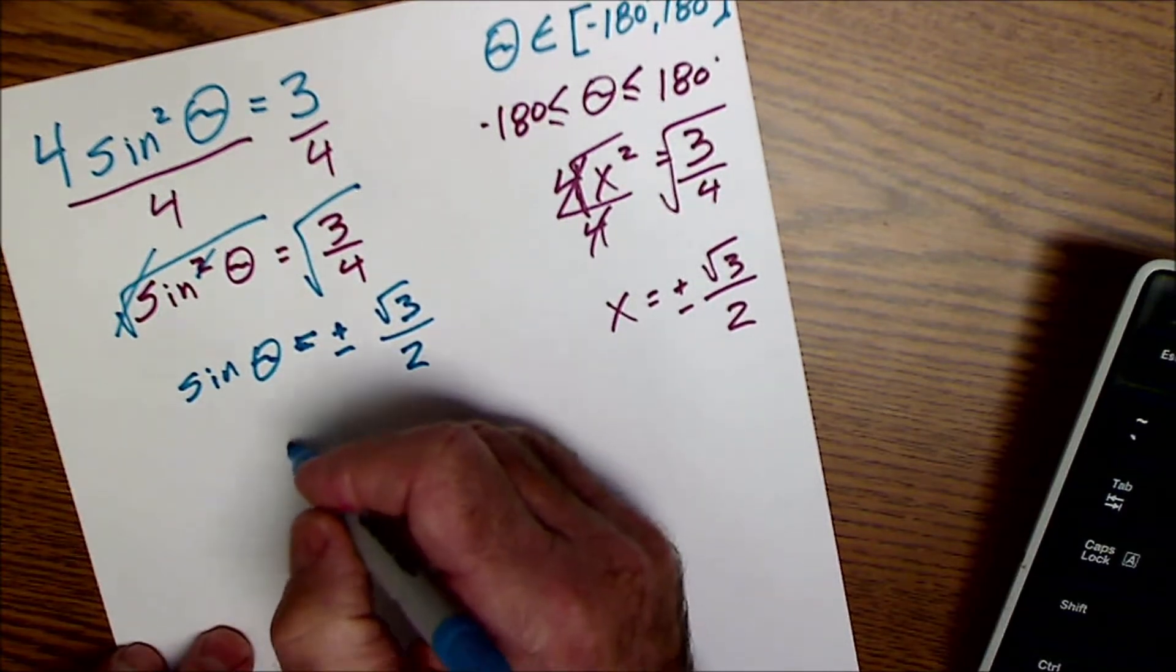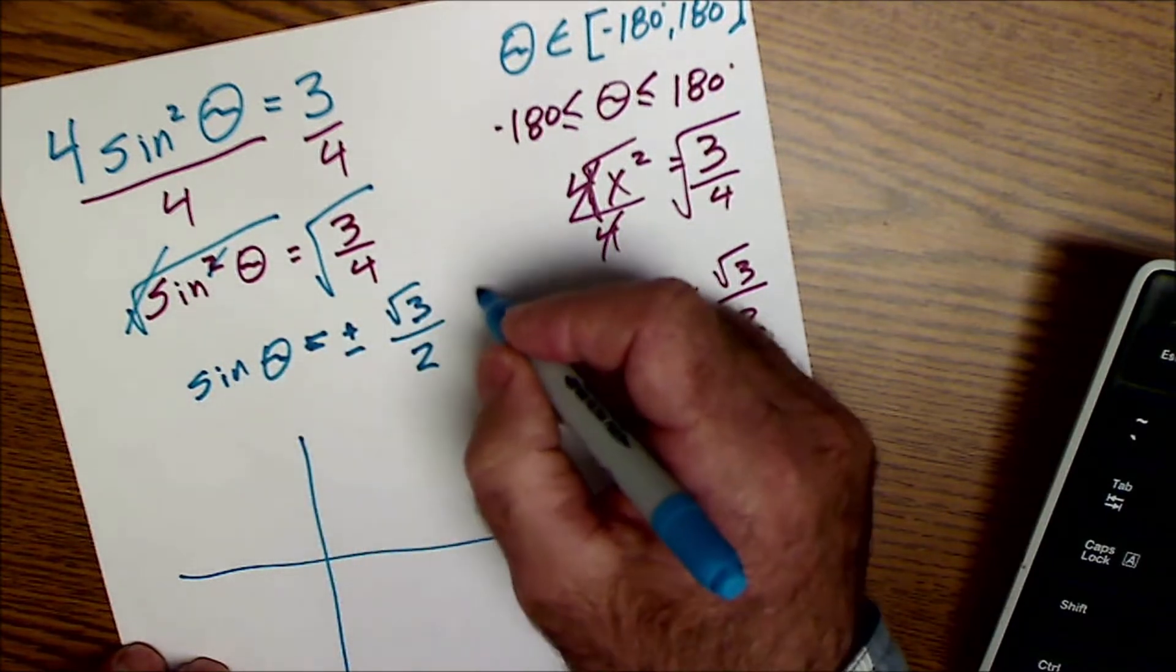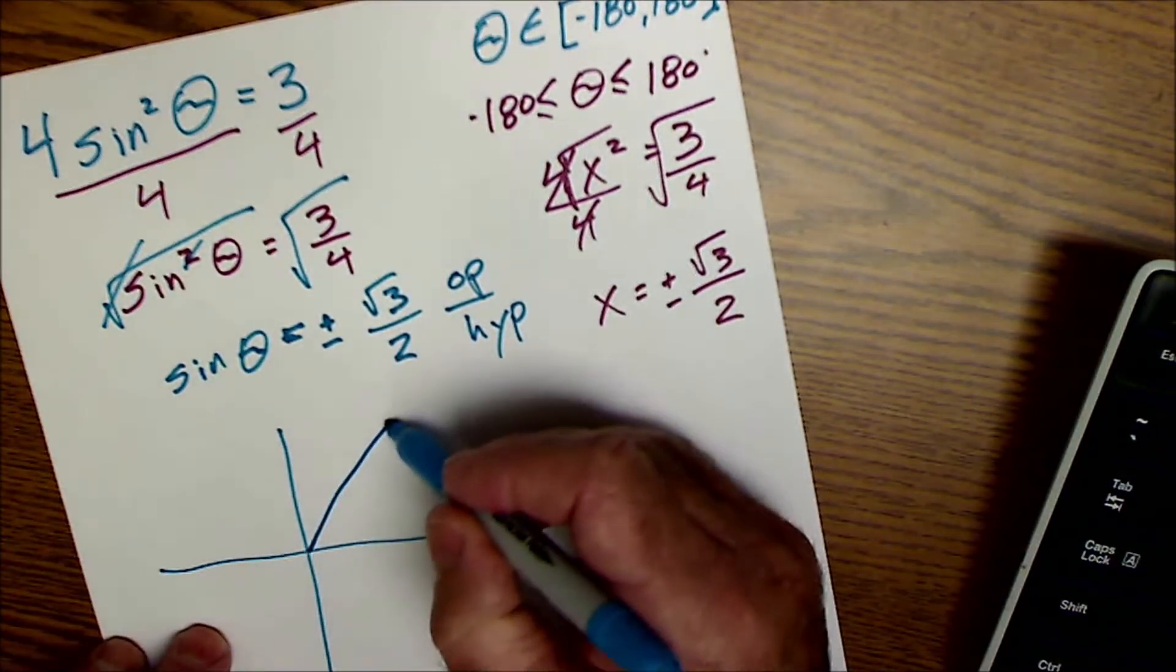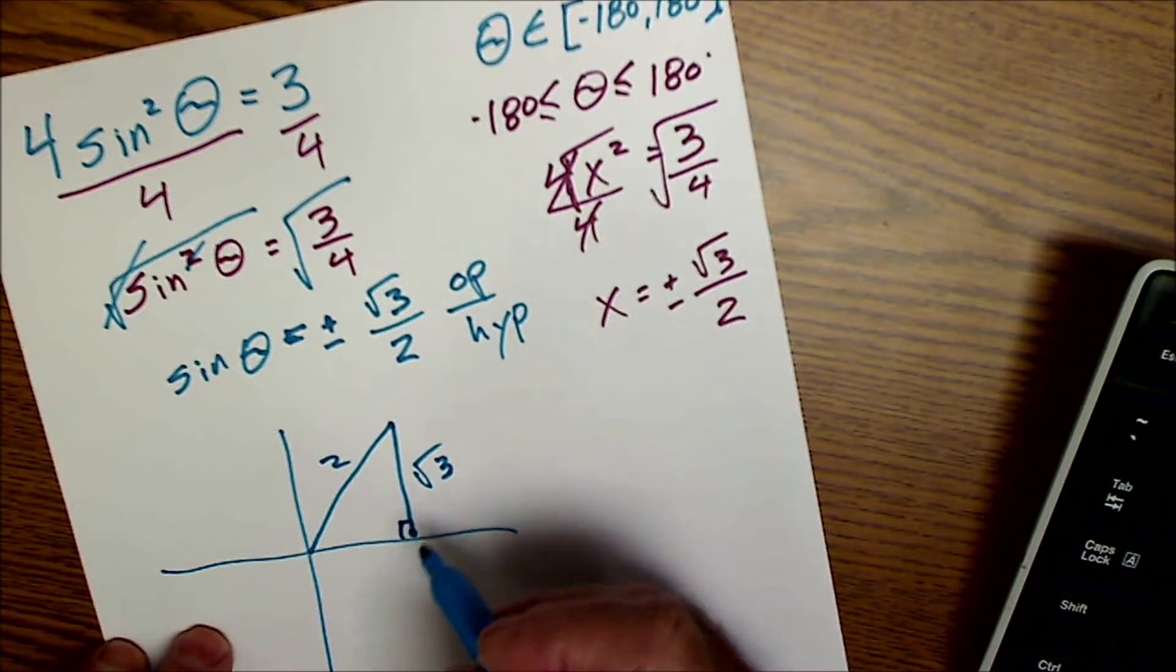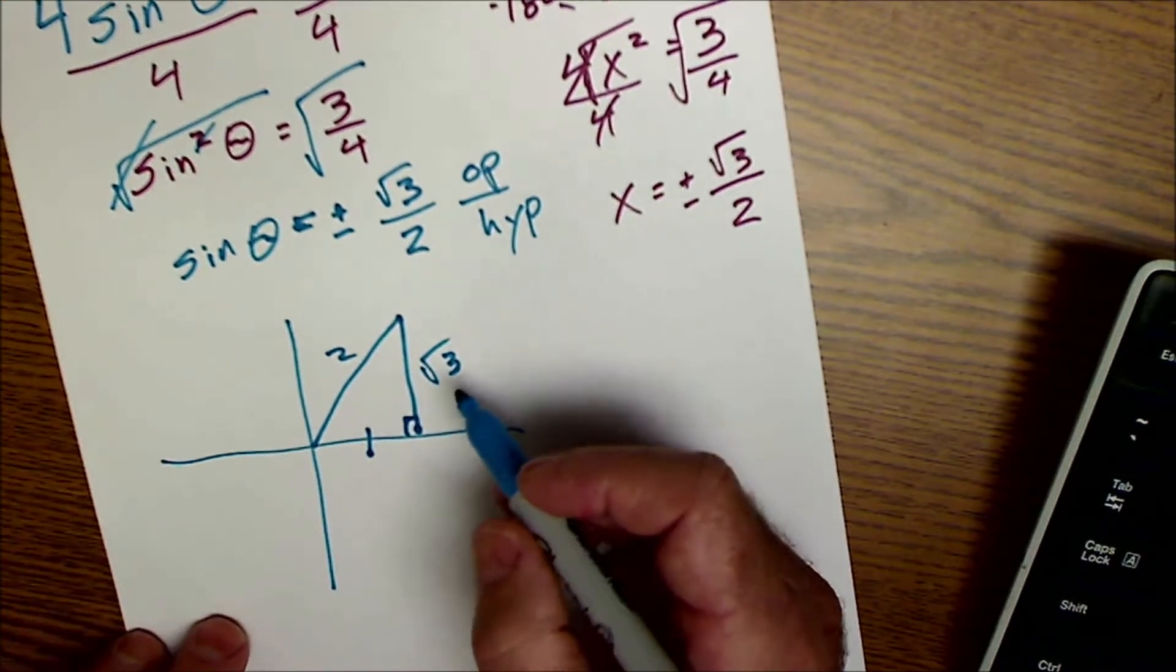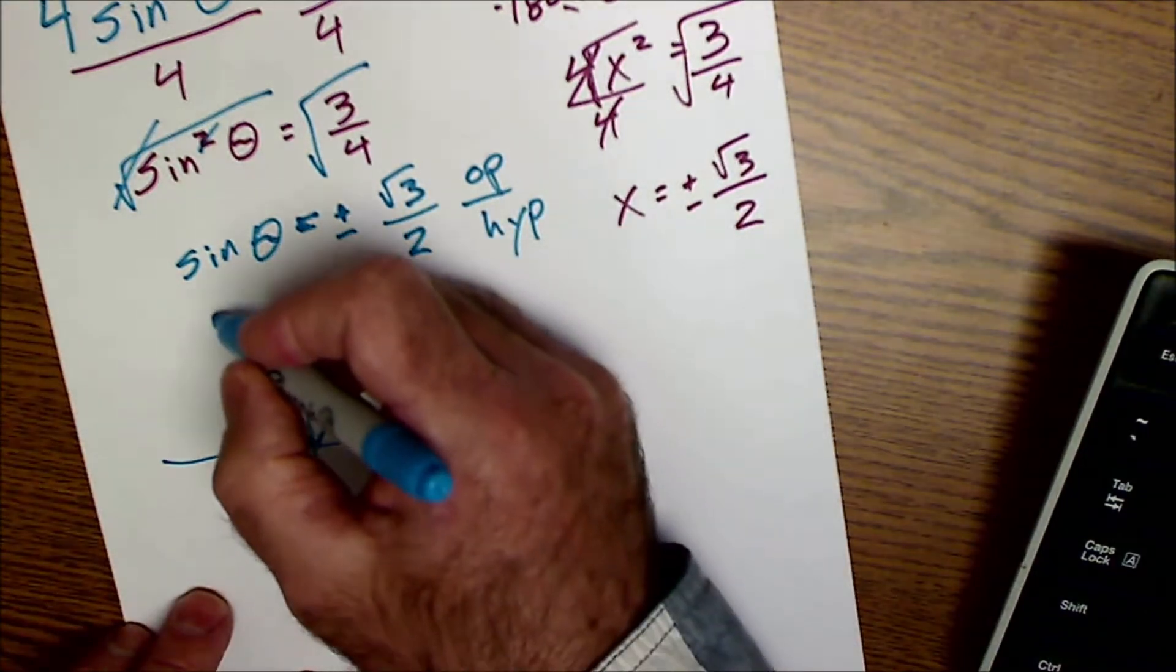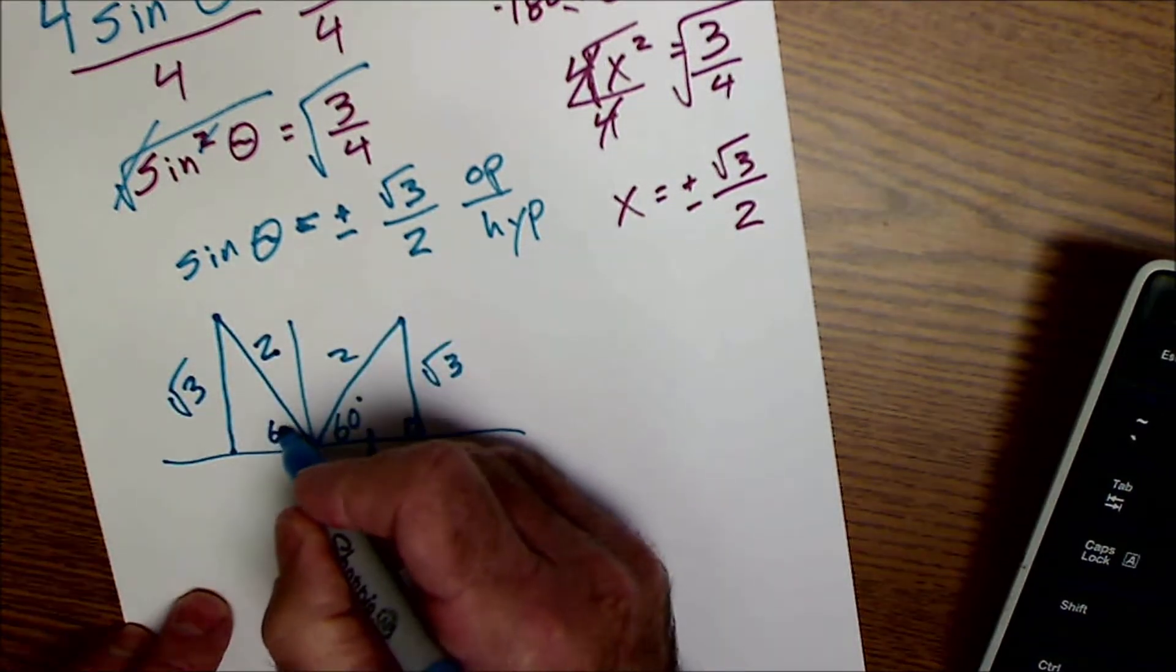This is an exact value problem. So that means this is going to be one of the triangles I know. This is sine of theta. So this is opposite over hypotenuse. So I'm looking for a positive root 3 over 2. That's going to happen here, where the opposite's root 3 over 2. I could use Pythagorean theorem and see that this is 1 squared plus root 3 squared equals 2 squared. I recognize that as a 30-60-90 triangle. So that angle will be 60. That'll happen here, but it'll also happen here in the second quadrant, where the opposite's root 3 over 2. And the reference is 60.